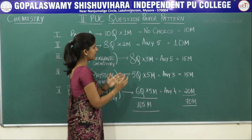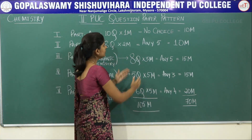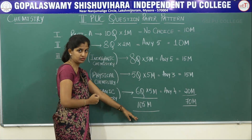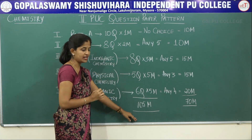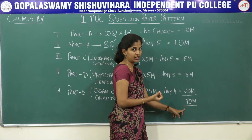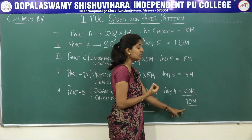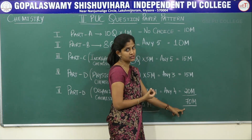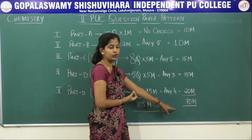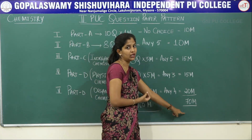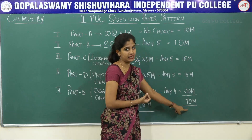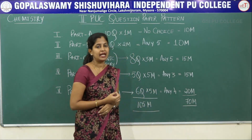In total, if you observe, the question paper is set for 105 marks including all choices. By excluding the choices, you have to attempt questions for 70 marks. So among 105 marks, you attempt only 70 marks — that is the total weightage of the question paper for theory. Thank you.